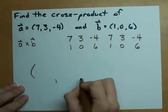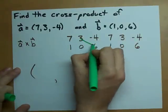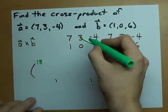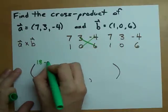Then, your answer, which is going to be in the form of a vector, is 3 times 6, that's 18, minus 0 times negative 4, that's 0.